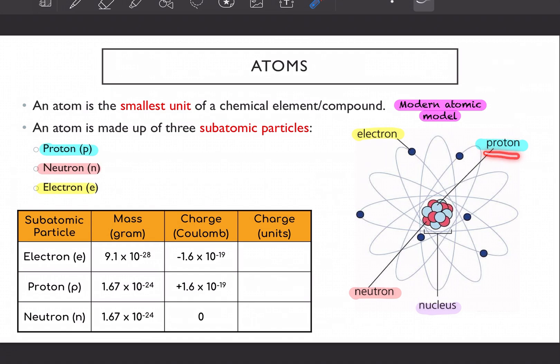The electron is orbiting around your nucleus. So your proton and neutron, it is encapsulated in the nucleus. Your proton and neutron, it lives in your nucleus.